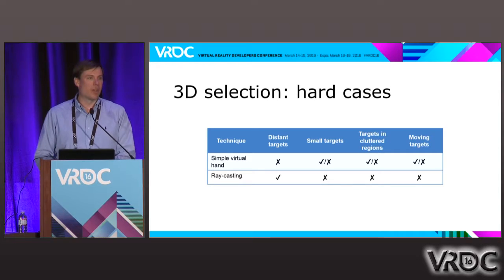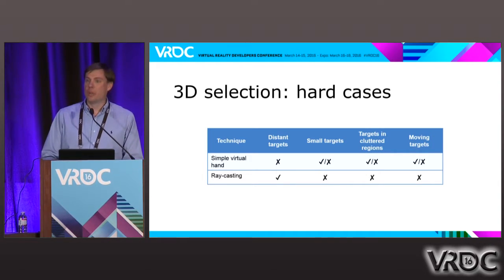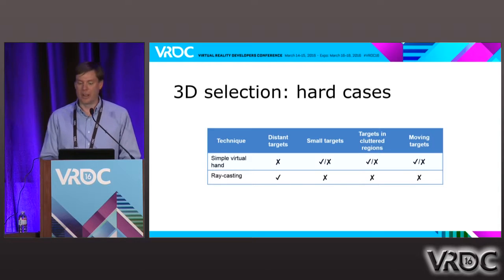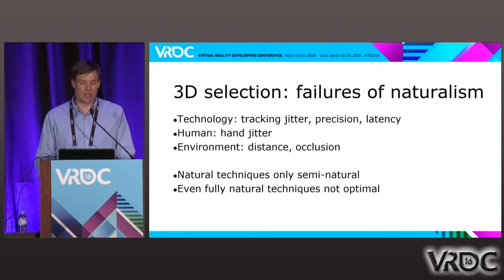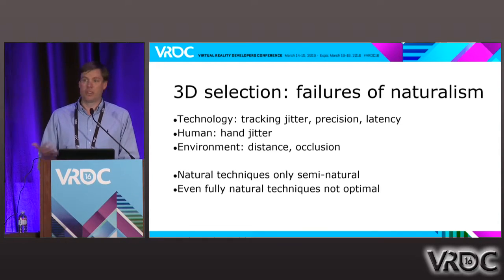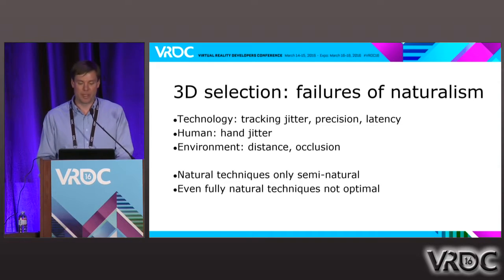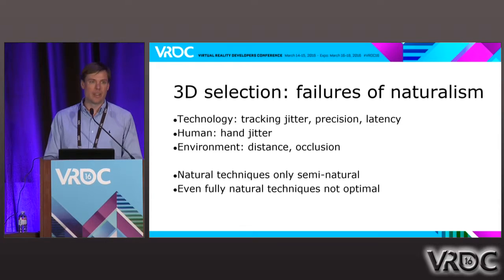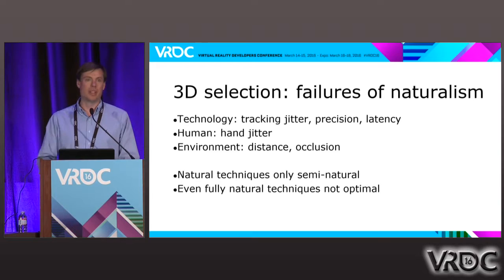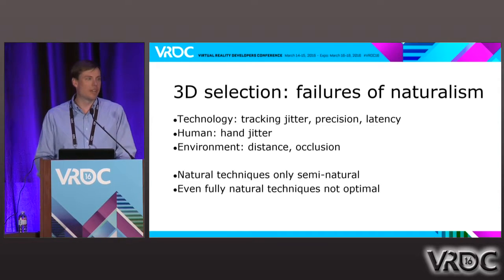The problem is when you get to the hard cases of selection, these techniques really break down. When we have targets that are far away, the simple virtual hand doesn't work. When targets are small, both can really fall down in performance. Targets in cluttered regions and moving targets are especially hard to select. Some of this is based on technology — trackers have jitter, precision issues, latency — and that's going to cause both techniques to fail. But there are things harder to fix: the human user also has natural hand jitter. And environments may have very distant or occluded targets.